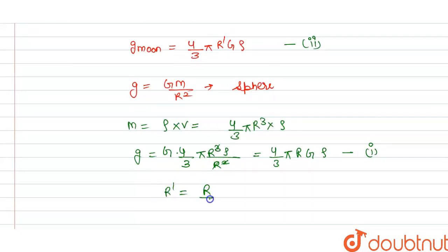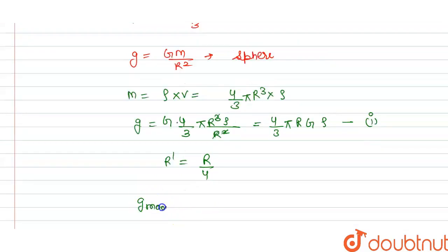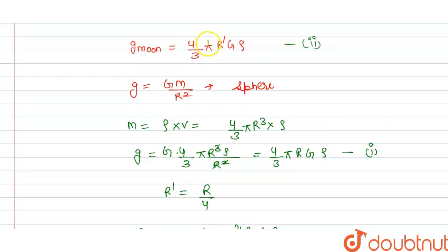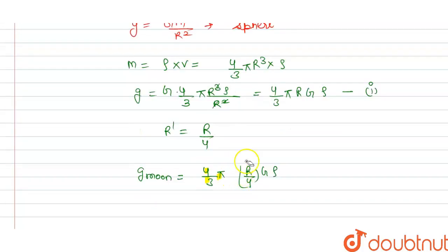So gravitational acceleration for the moon is g_moon equals (4/3)π times (r/4) times G times rho. This gives g_moon equals g divided by 4. With g equal to 9.8 m/s², g_moon equals 9.8 divided by 4, which is 2.45 m/s².